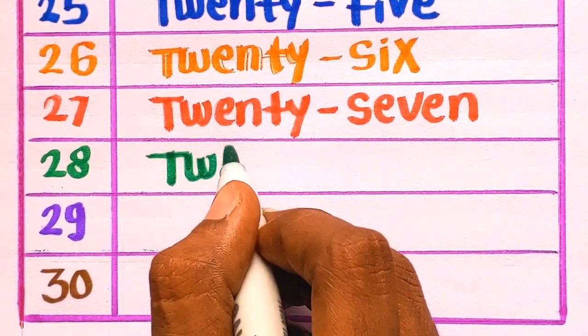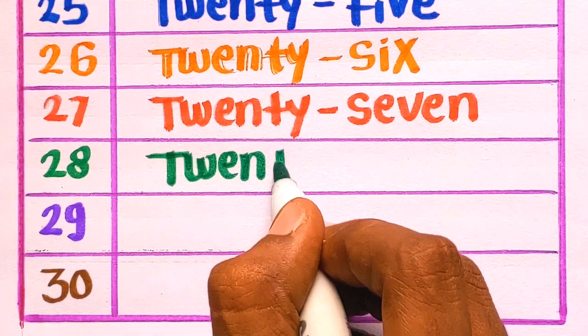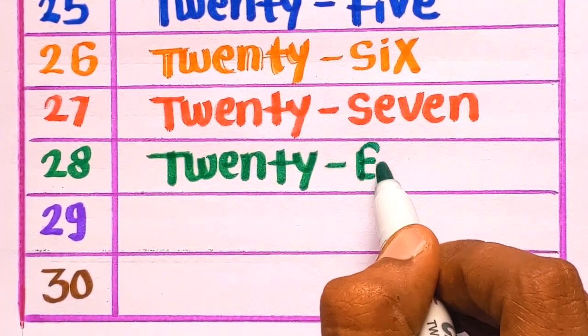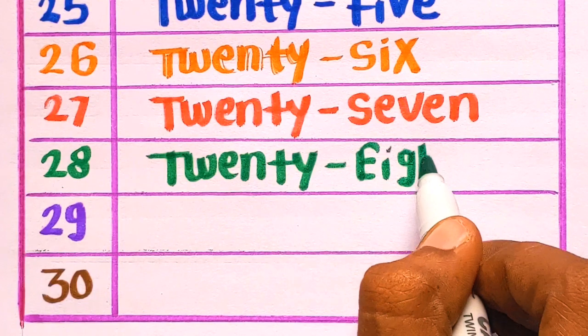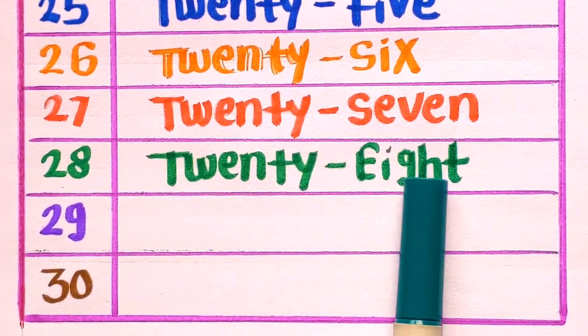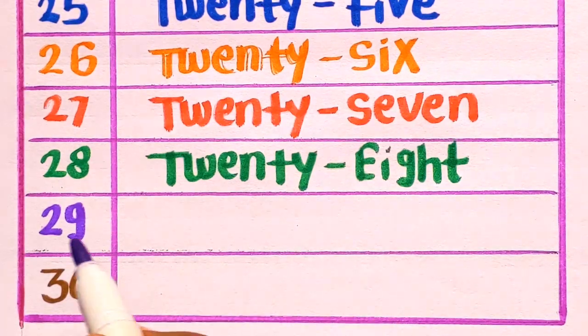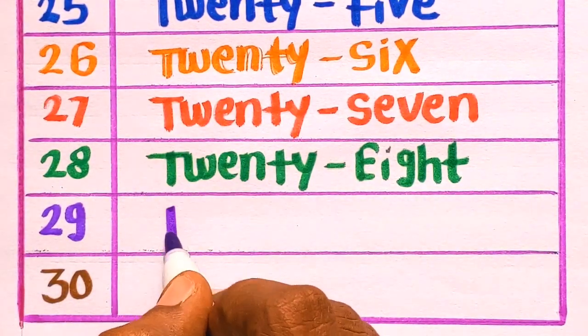T-W-E-N-T-Y-28. E-I-G-H-T-28, with the green color. Next is 2-9-29.